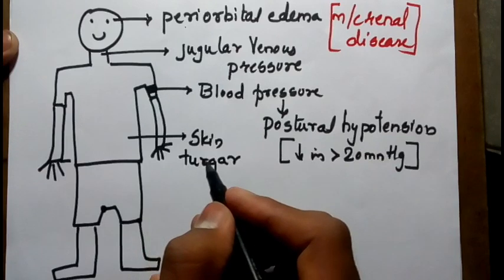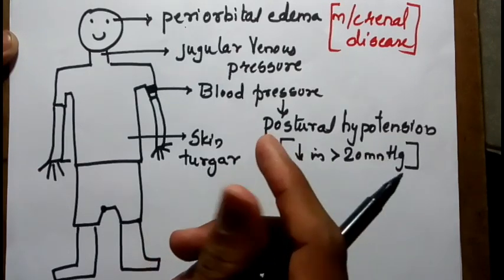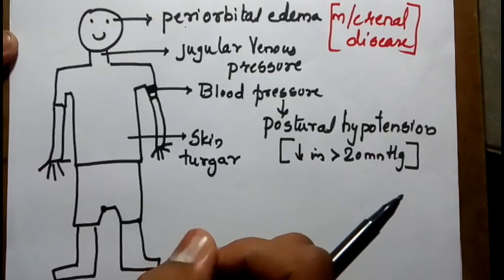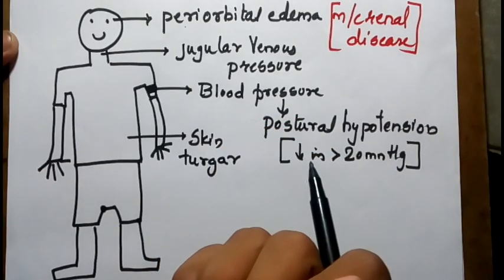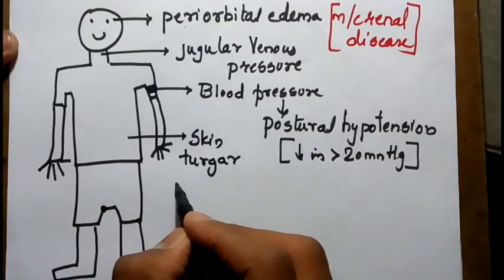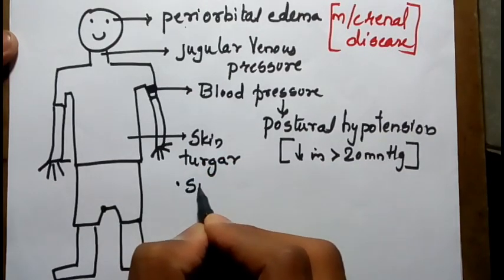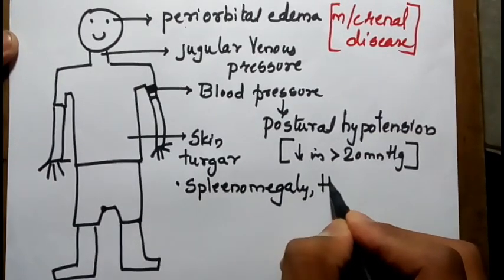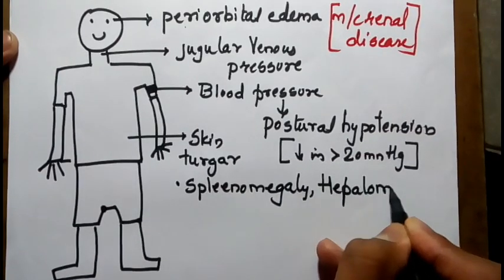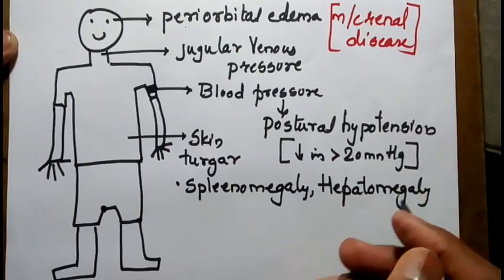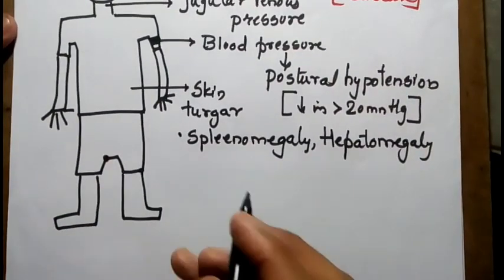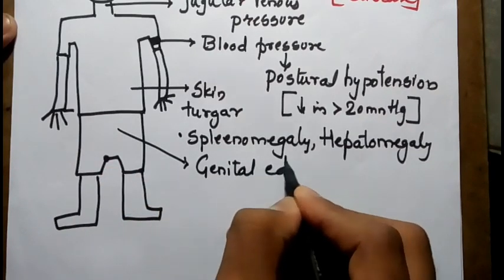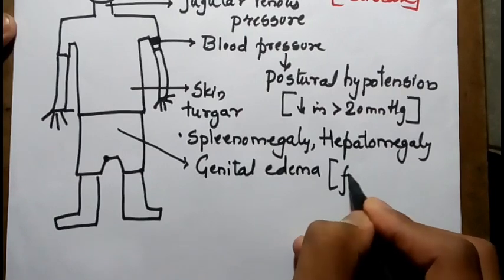We should check skin turgor — the state of hydration of the skin — by pinching the skin over the abdomen and observing its springiness, i.e., the elasticity of the skin. We should also check for splenomegaly by palpation, and for any genital edema, as in filariasis.